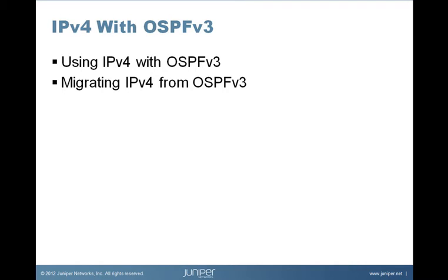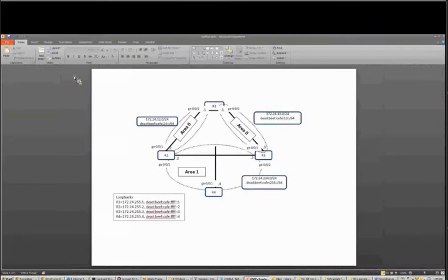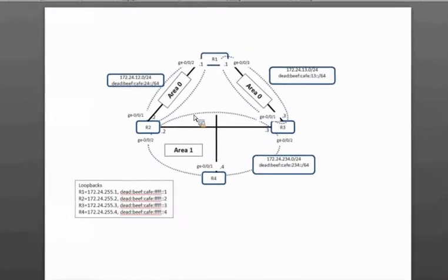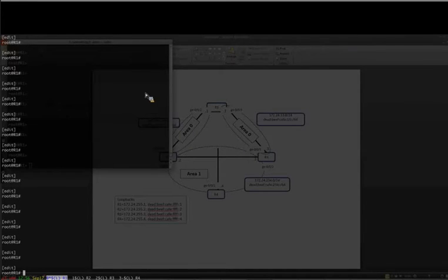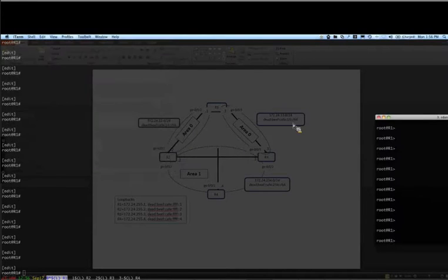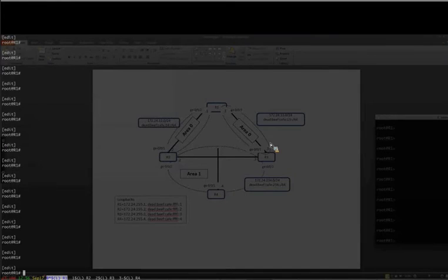Here we have an example network topology. We have R1, R2, R3, and R4. R1, R2, and R3 are running in area 0. R2 and R3 are ABRs with R4 running in area 1. We currently have both OSPF version 3 and OSPF version 2 for IPv6 and IPv4 traffic.